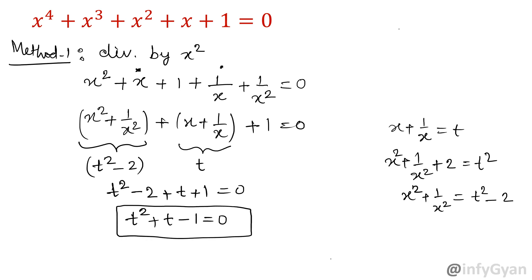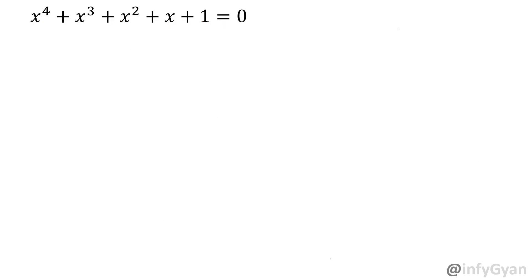That means t squared plus t minus 1 equal to 0. One quadratic equation is there. Now we have to solve this quadratic equation using the quadratic formula, where a is 1, b is 1, and c is negative 1.